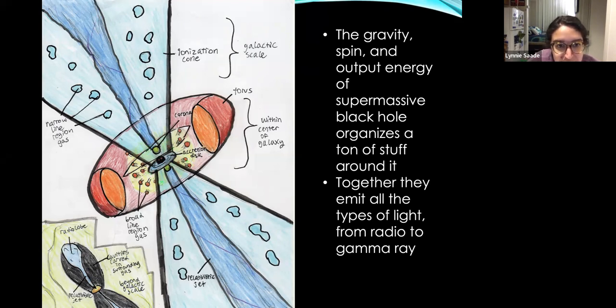There is also the narrow line region gas, which flows outward from the accretion disc in a big wind and then extends throughout the rest of the galaxy. And this also glows in visible light. And so surrounding the black hole is this thing called the torus. And this is basically a big ring of dust and gas that surrounds the black hole and its accretion disc and the broad line region. And depending on your viewing angle, the dust in the torus can block your view of all this stuff inside.